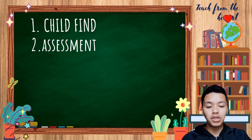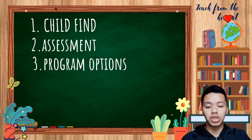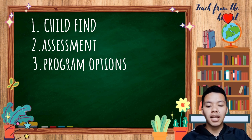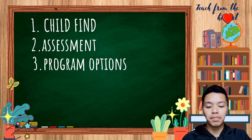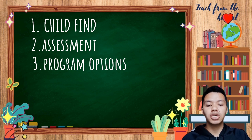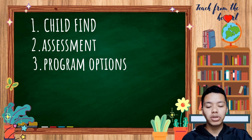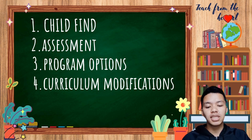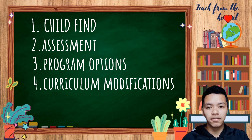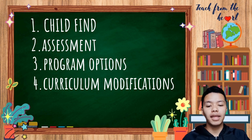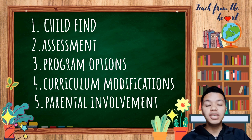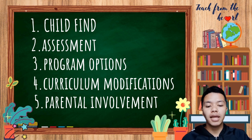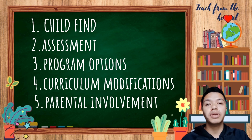The third component is program options. Schools with or without trained SPED teachers shall make education accessible to learners with disabilities. Options include self-contained classes, inclusion in general education, and resource rooms. The fourth component is curriculum modification — using adaptations and accommodations in classroom instruction. The fifth component is parental involvement, which includes observing their child's performance, volunteering as a teacher aide, and providing academic, moral, and spiritual support.